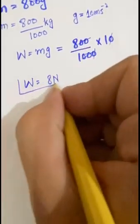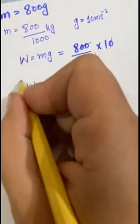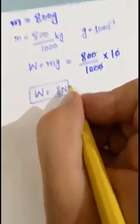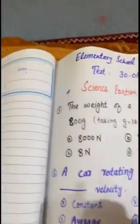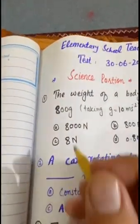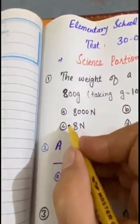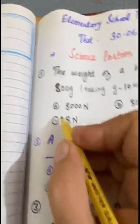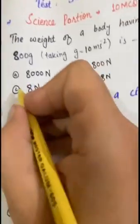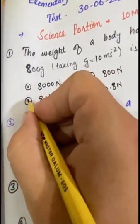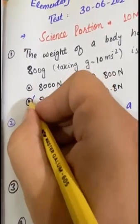So the correct option for MCQ 1 is 8 Newton — option C is the correct option.